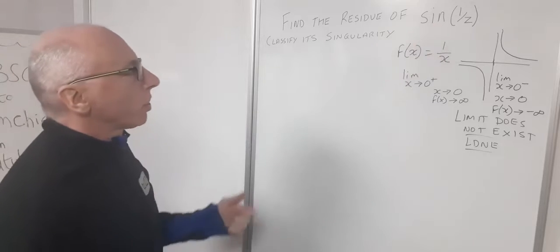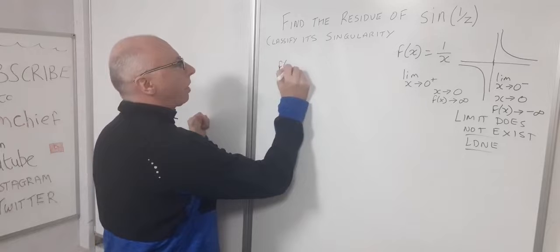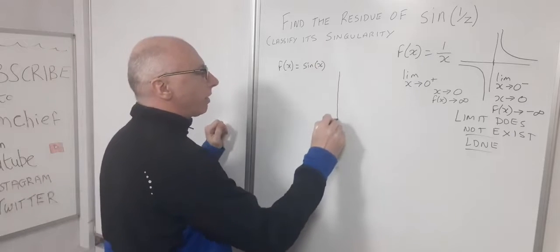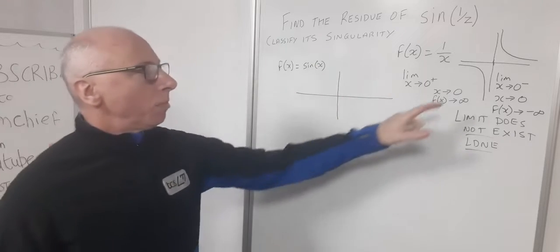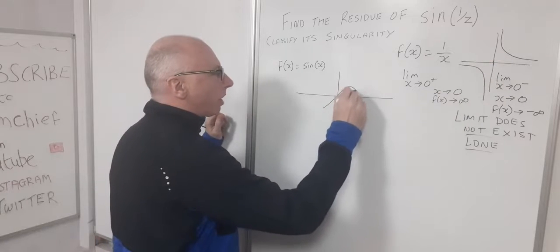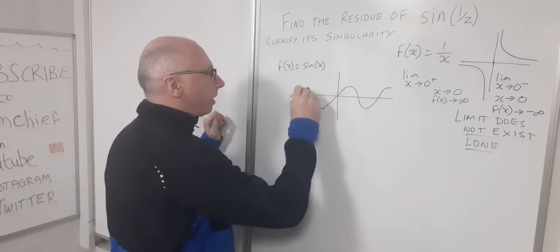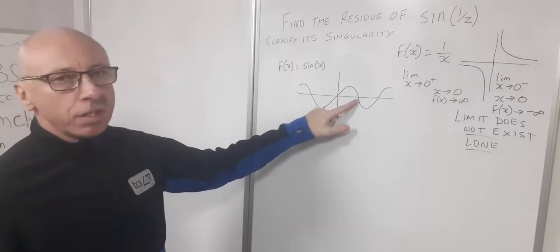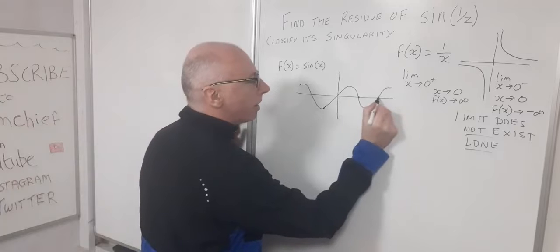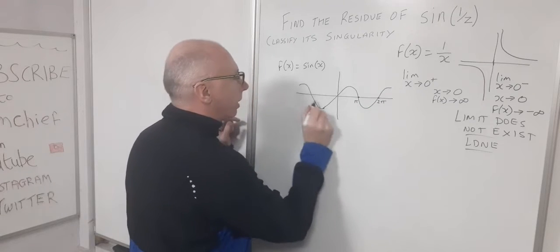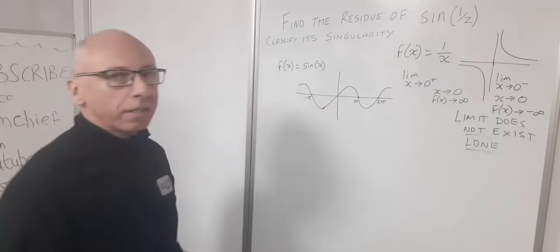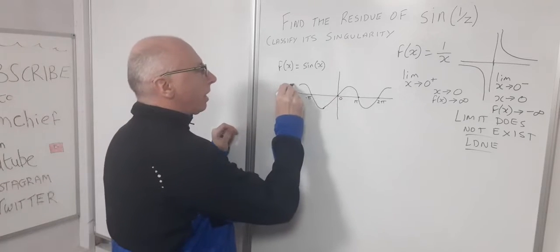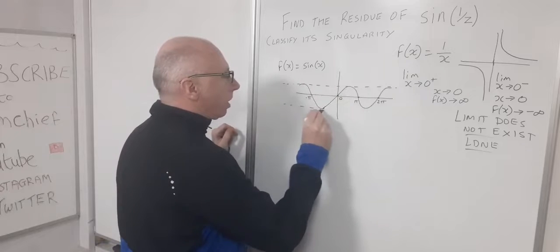Now what about the sine function? Let's look at f(x) = sin(x). The sine function is much more well-behaved than 1/x. It's continuous everywhere and crosses the x-axis at every interval of pi — so at pi, 2pi, minus pi — and at zero as well.